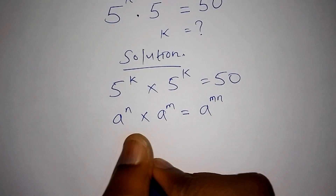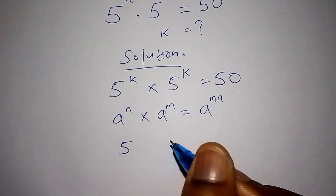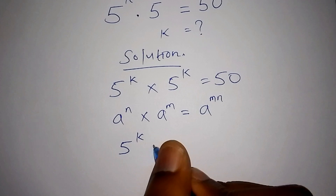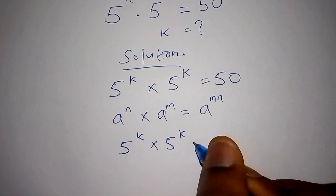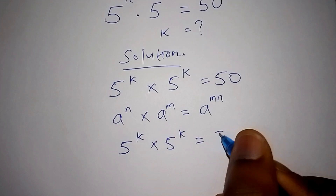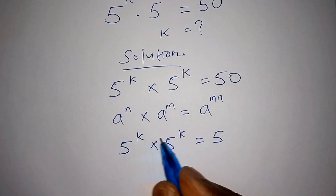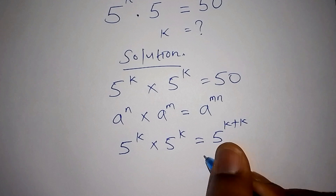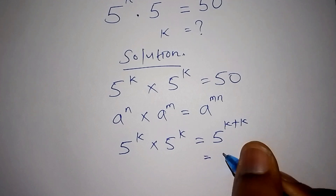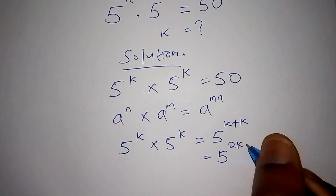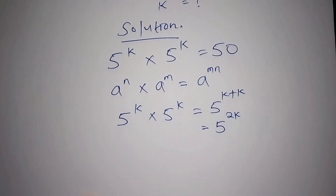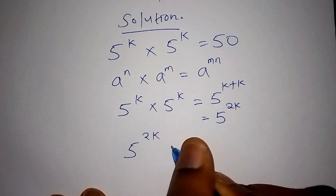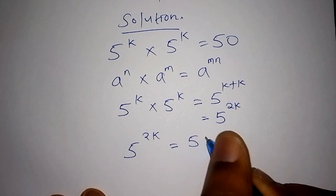So this means that 5 to the power of k multiplied by 5 to the power of k should give us 5 to the power of k plus k. And k plus k means we have 5 to the power of 2k. So now we have 5 to the power of 2k equals 50.